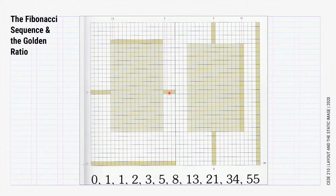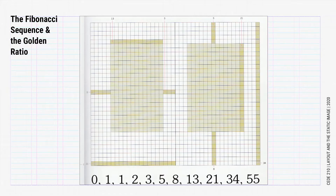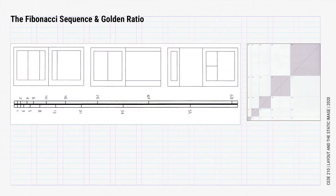We can use the numbers in the Fibonacci sequence to construct our grid. In this example, the page is 21 by 34 units. The inner margin is 3, the outer margin is 5, the footer margin is 8, the text block's width is 13, and the text block height is 21. You can also see how the Fibonacci sequence is applied here. The modular pica sticks slide rule is divided using the Fibonacci sequence, and the layouts above are designed with the slide ruler.